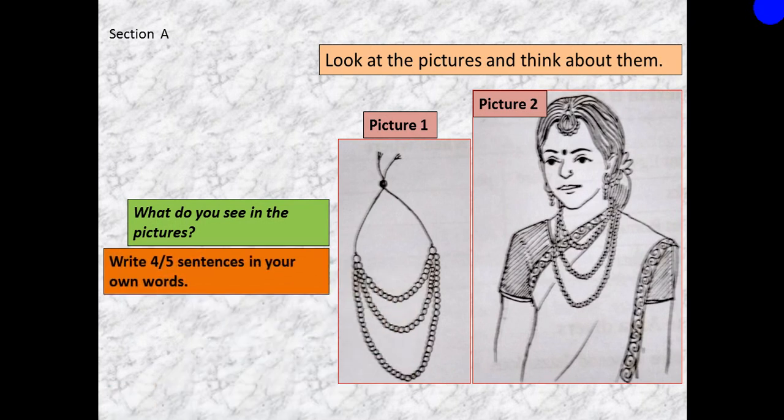Write four or five sentences in your own words. Now go to Section B. In Section B, there is a text. You have to read the text silently, individually and very carefully, because after reading the text you have to do some tasks. So let me show you some difficult words of the text for your better understanding.